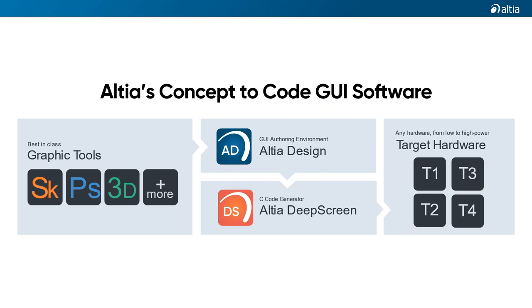A quick refresher on how our Concept2Code GUI software works. You, the customer, bring your graphics from Sketch, Photoshop, Maya, or any other graphics tool into Altea Design. In AD, you create your own GUI around those images. Then send your design to Deep Screen, where C code is automatically generated. The hard work is done by Deep Screen — little or no manual coding is necessary.